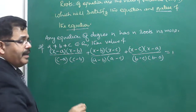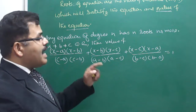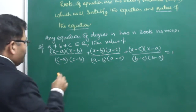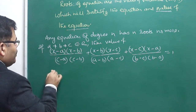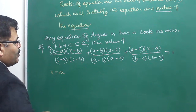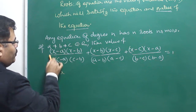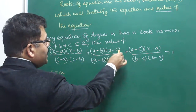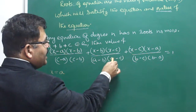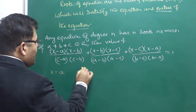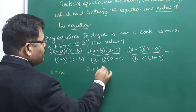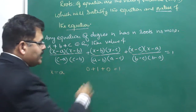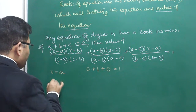A quadratic equation can have a maximum of two roots. Now let me explain: if I put x equal to a, then (a-a) is 0, so the whole first term becomes 0. The remaining terms (a-b)/(a-b) and (a-c)/(a-c) cancel, giving 1. So 0 + 1 = 1, which satisfies the equation.